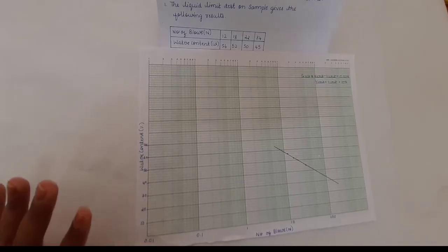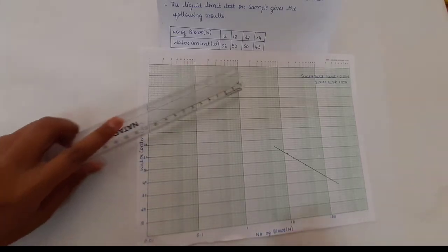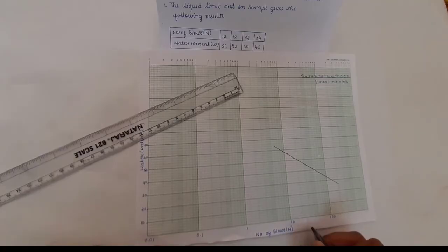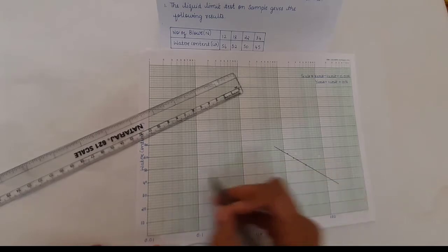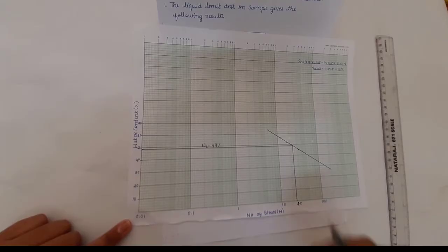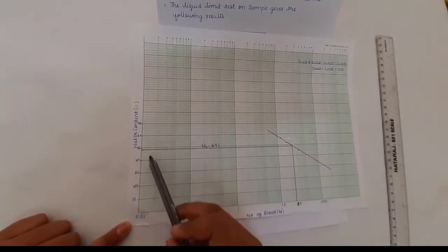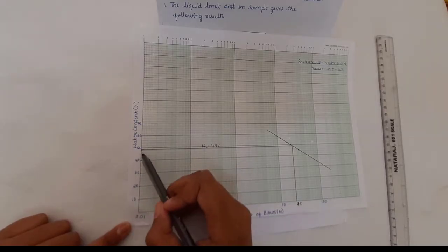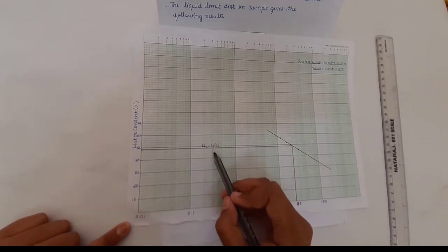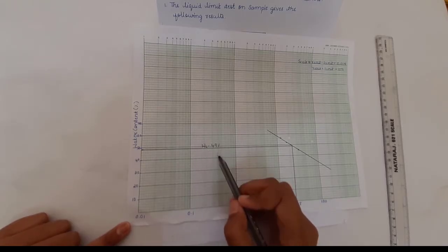Our first aim is to calculate the liquid limit of the soil. To do this, mark the point N = 25 on the x-axis, draw a vertical line from 25 upward to the flow curve, then draw a horizontal line to the y-axis. Whatever value you get on the y-axis is the liquid limit of the soil. Here the liquid limit is 49%.